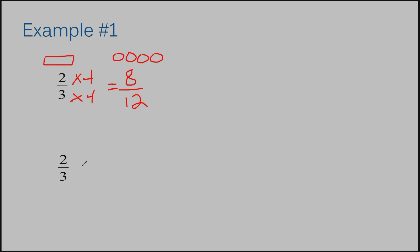Let's try out this second fraction of two-thirds. We could do anything to it that we want, but it just needs to be the same thing that happens to the numerator and the denominator. Let's try multiplying by ten. Two times ten is twenty. Three times ten is thirty. Two-thirds is the exact same thing as twenty-thirtieths, and also eight-twelfths is the exact same thing as twenty-thirtieths. We are talking about the same values here, although the numbers look different. So two-thirds, eight-twelfths, twenty-thirtieths — these all have the same values.